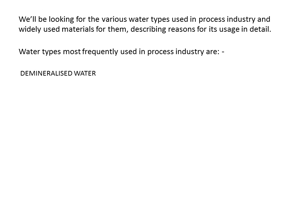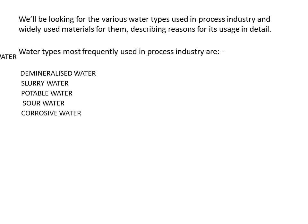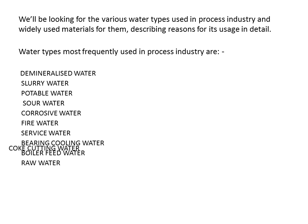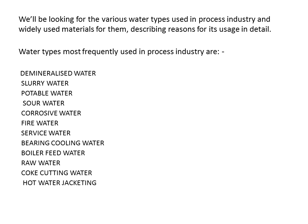Demineralized Water (also called DM Water), Slurry Water, Potable Water, Sour/Corrosive Water, Fire Water, Service Water, Bearing Cooling Water, Boiler Feed Water, Raw Water, Co-cutting Water, Jacketing Water, Hot Water, Polished Water, and Cooling Water. These are the various water types for which materials will be discussed in detail.